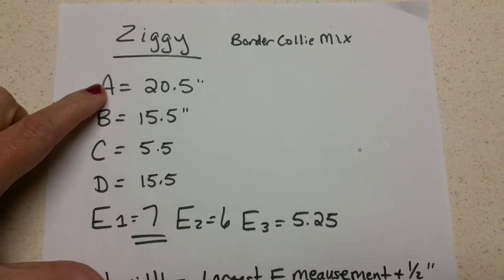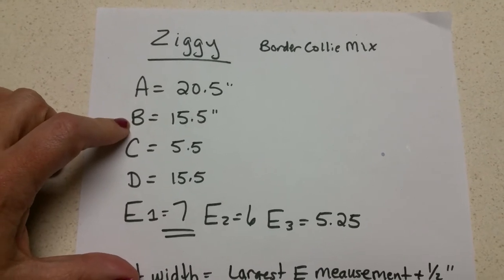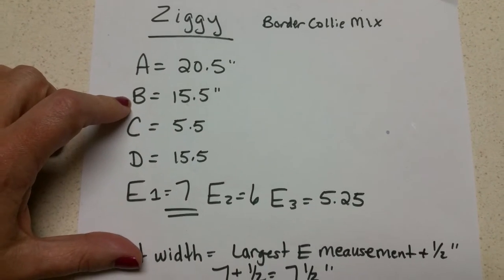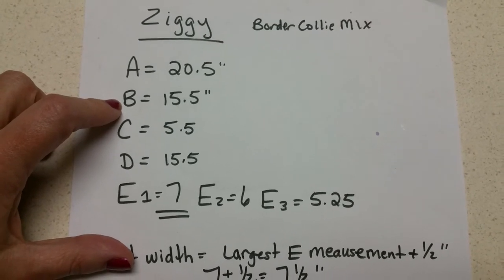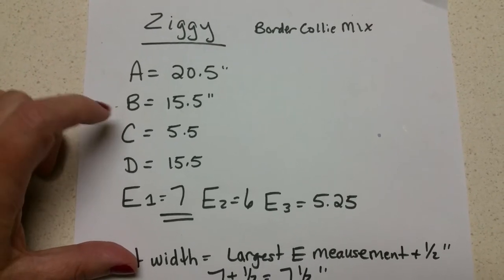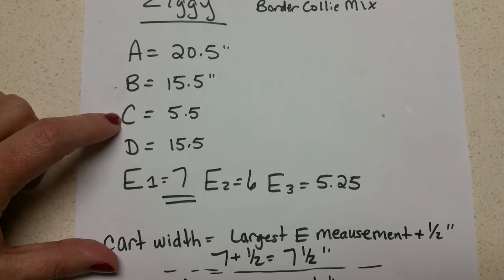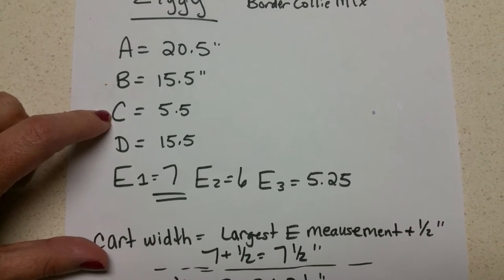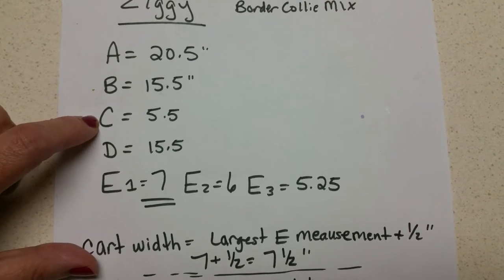A tells us how tall he is from the ground to the top of his shoulder. B tells us how long he is from the center of his shoulder to the beginning of his back leg. C tells us how wide or long his back leg is, so from the beginning of his leg to the back of his leg.